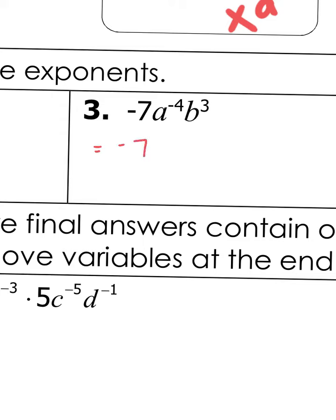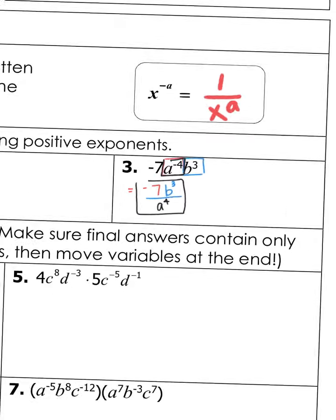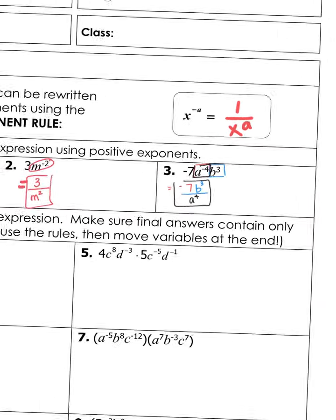Same thing with number 3. This negative 7 doesn't flip. The only thing that flips down is something that has a negative exponent attached to it. In this case, we have a to the negative fourth and b cubed. Well, b cubed is positive — b to the third power. So the only thing I'm going to flip is a to the negative fourth, which will become a to the positive fourth down in the denominator. You only move what is negative.